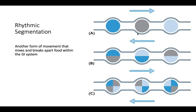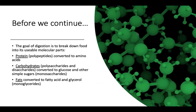Two forms of muscular contractions in the gastrointestinal tract: peristalsis, already discussed, and rhythmic segmentation — another form of movement that mixes and breaks food apart within the GI tract through a back-and-forth chopping and churning action.